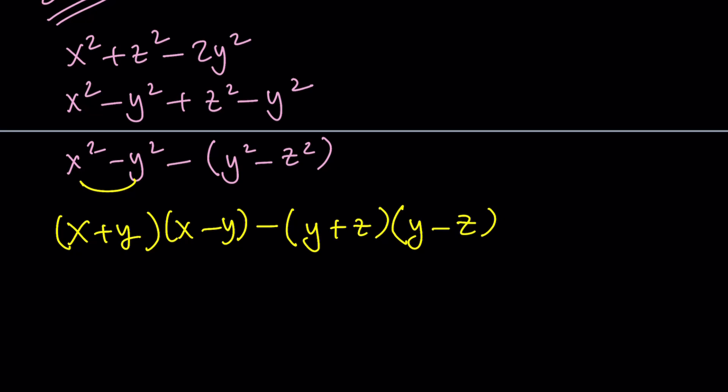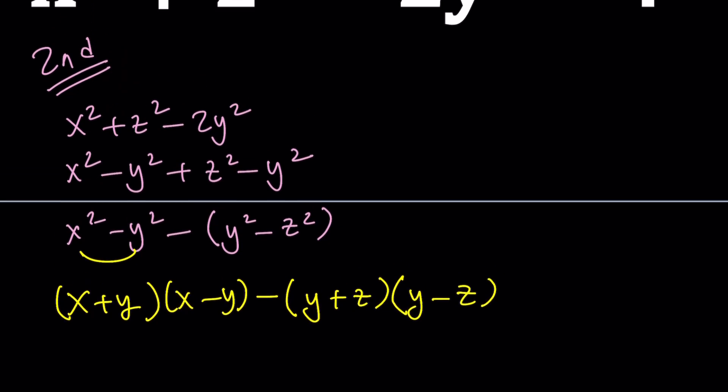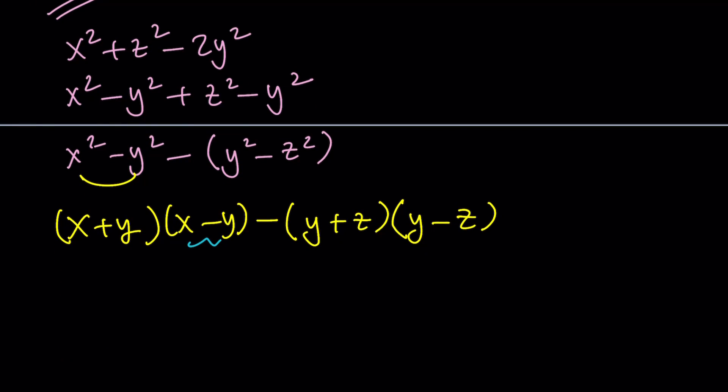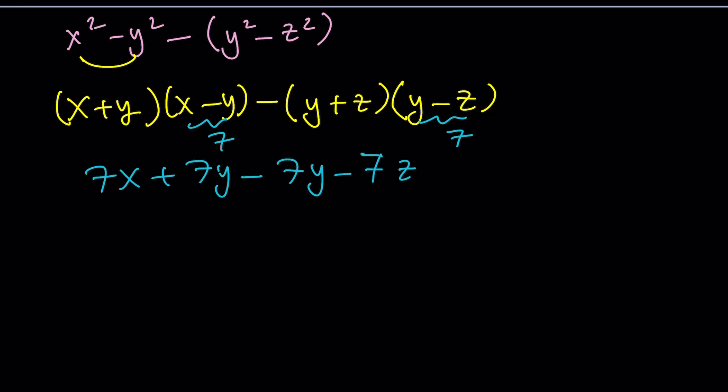But we do know something. For example, x minus y equals 7, that's given. And y minus z is also 7. So this gives us something nice. If we distribute the 7, we get 7x plus 7y minus 7y minus 7z. The 7y cancels out, and we end up with 7x minus 7z, which can be factored into 7 times x minus z.